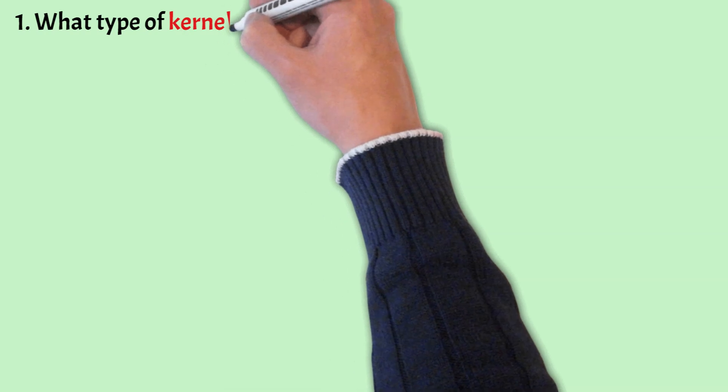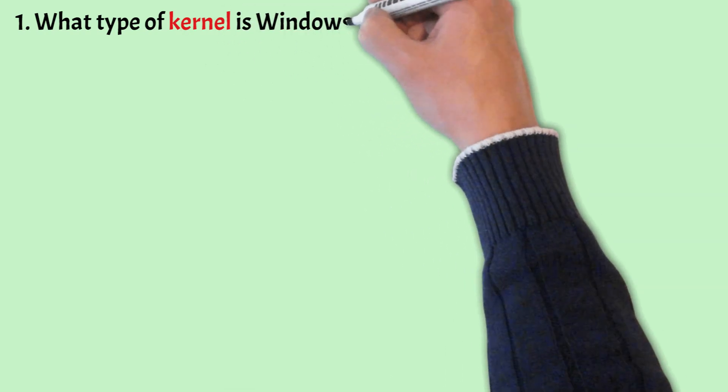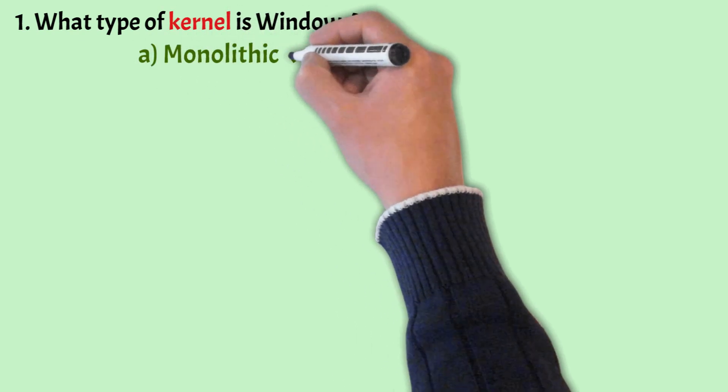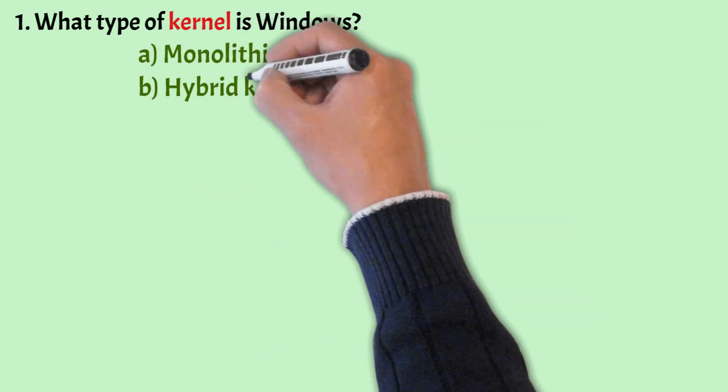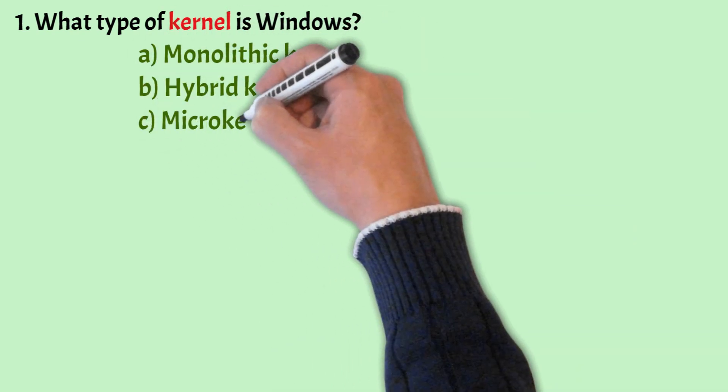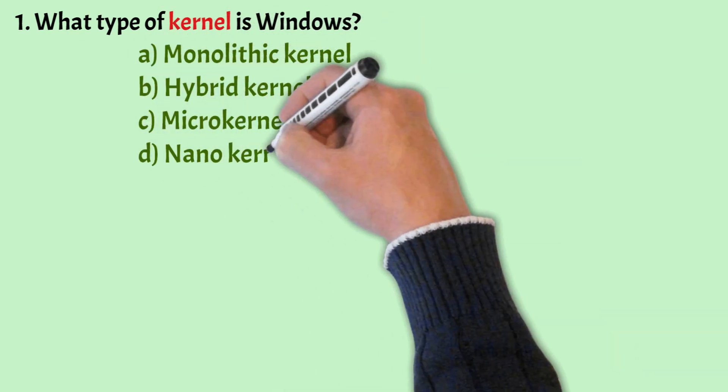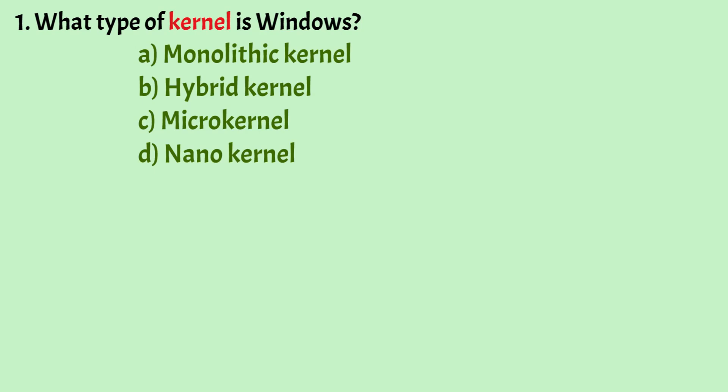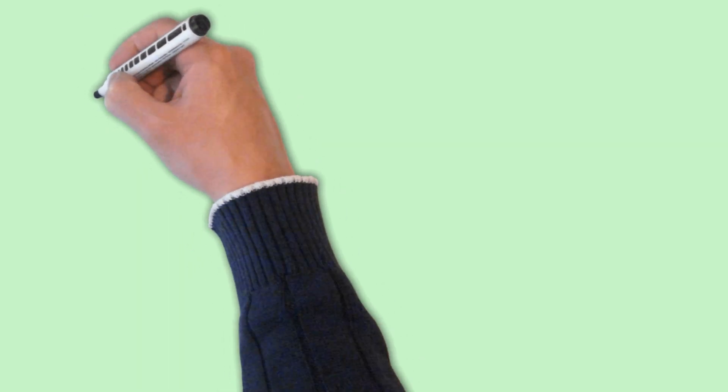Let's begin with the first question. What type of kernel is Windows? The options are: Monolithic Kernel, Hybrid Kernel, Micro Kernel, Nano Kernel. The correct option is Option B, that is Hybrid Kernel.